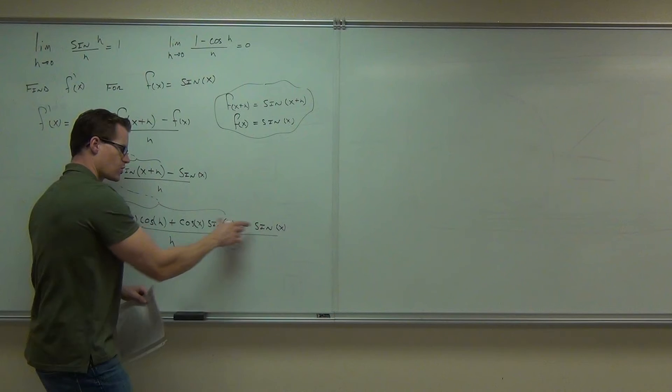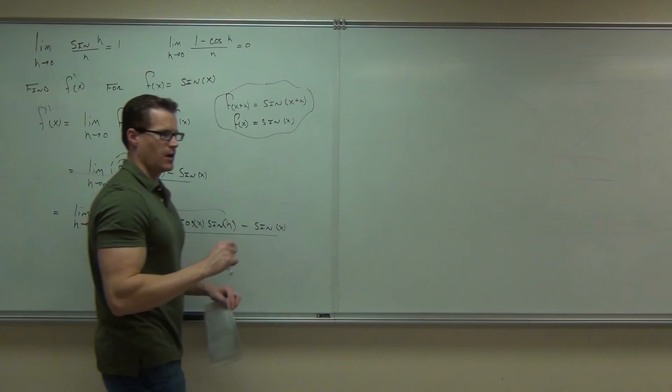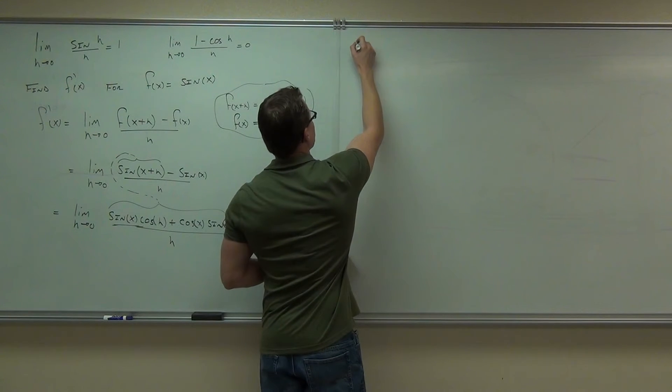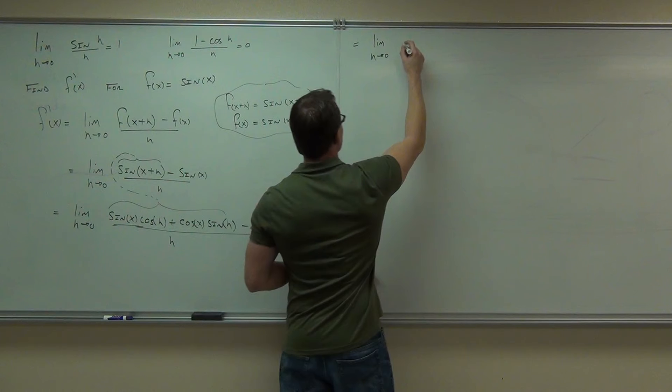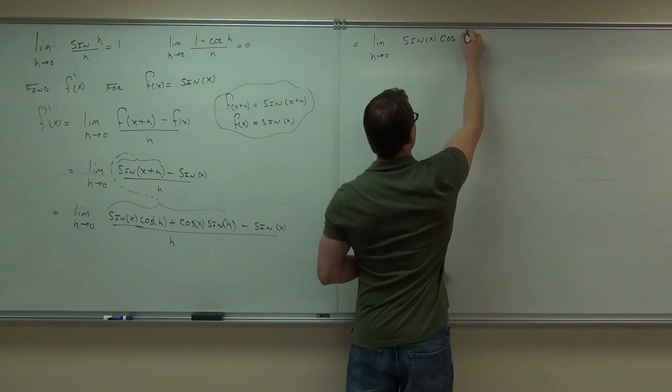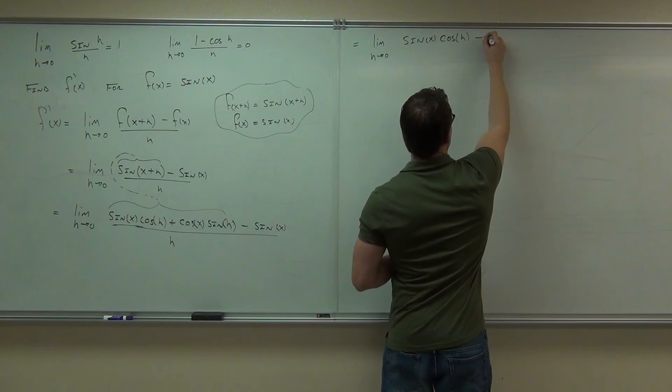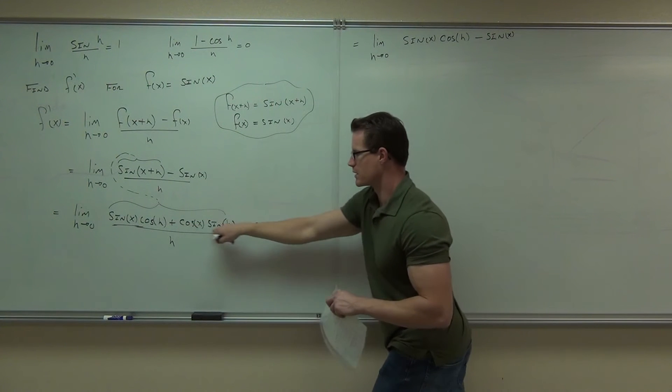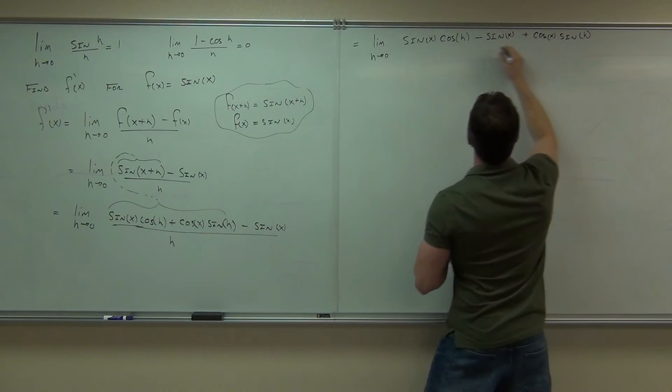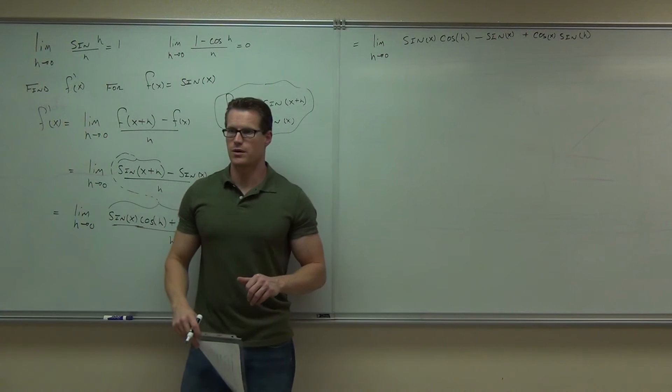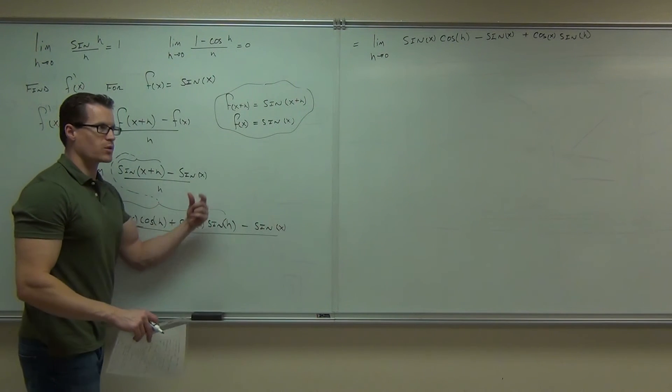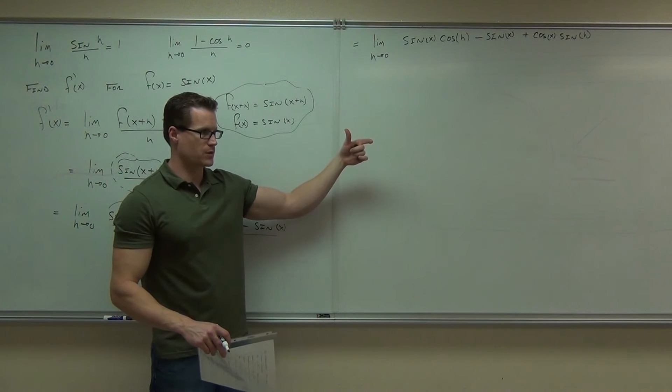Now, I'm just going to interchange these two things real quick so I can have my sine of x next to this sine of x. I'm going to end up probably factoring that out. Actually, I'm definitely going to be factoring that out. So let's just go ahead and interchange this term with that term. So sine x cosine h minus sine x and then plus this thing at the very end. Are you okay with that so far? Sure, so just reverse those things.